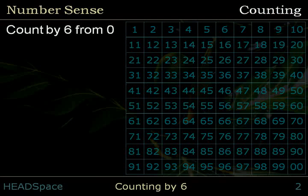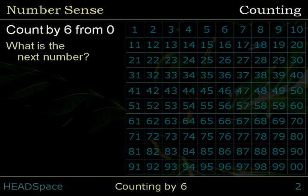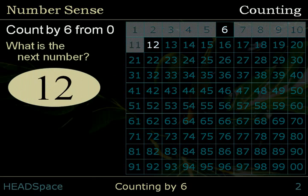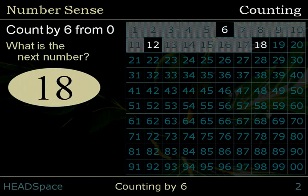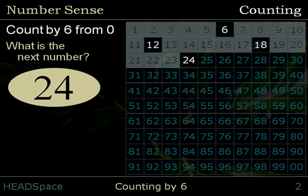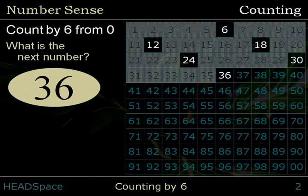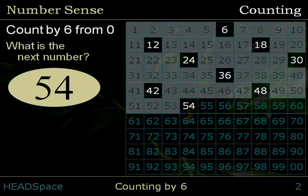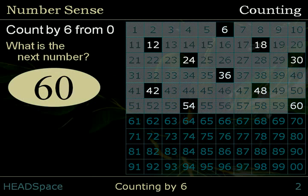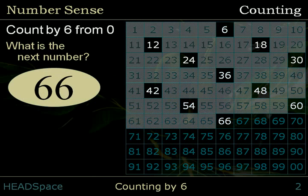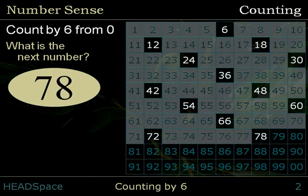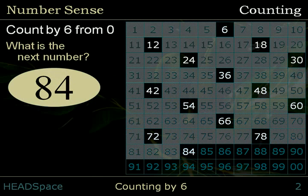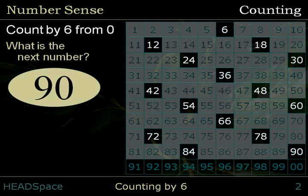Count by 6 from 0. What is the next number? 6, 12, 18, 24, 30, 36, 42, 48, 54, 60, 66, 72, 78, 84, 90, 96.